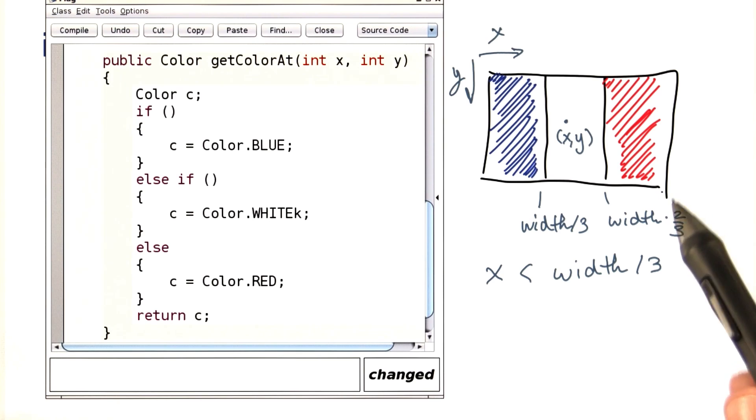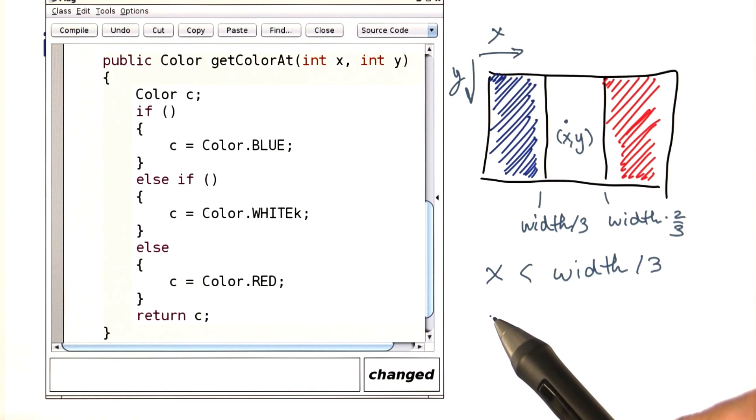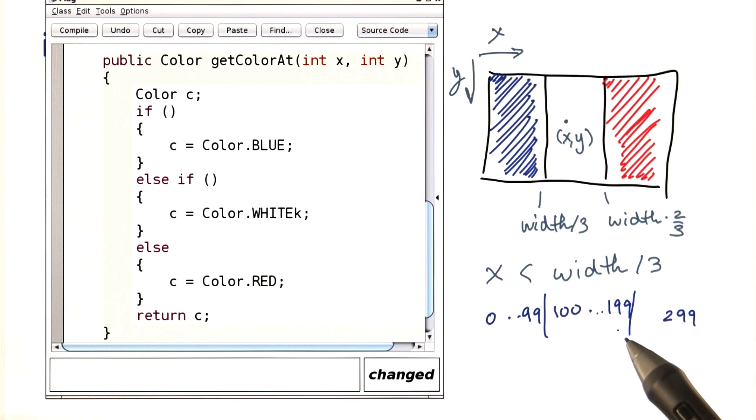So, let's assume that the width was 300. Then x could be any value between 0 and 299. The first 100 values from 0 to 99 should be blue. The values from 100 to 199 should be white. And the values from 200 to 299 should be red.